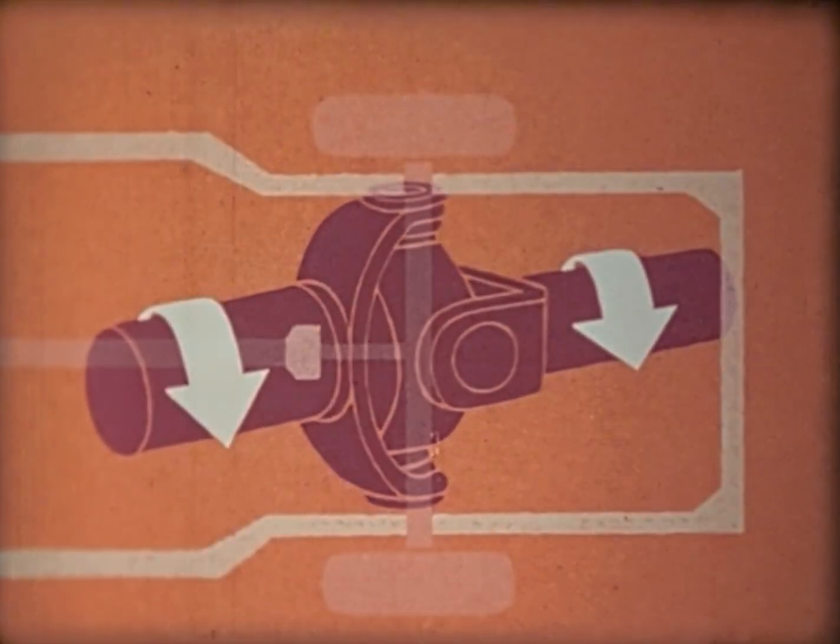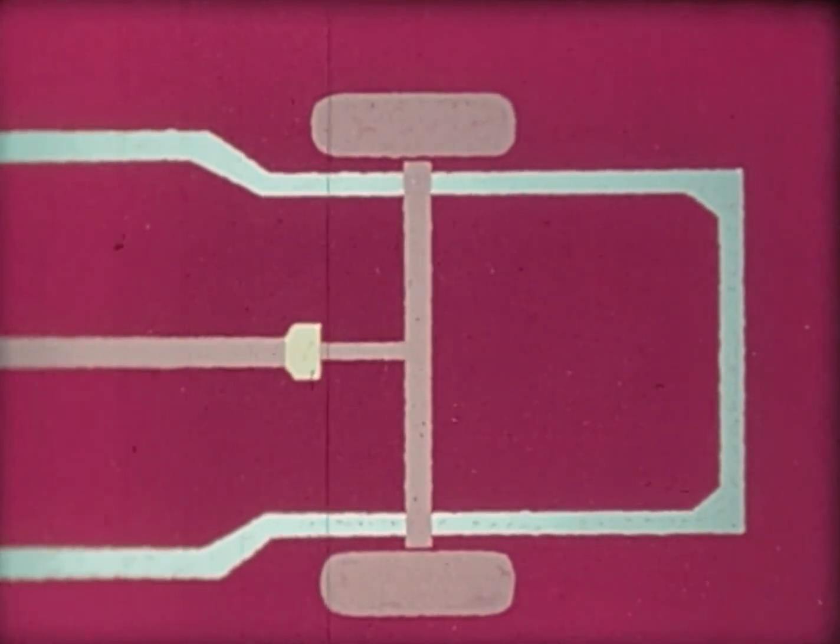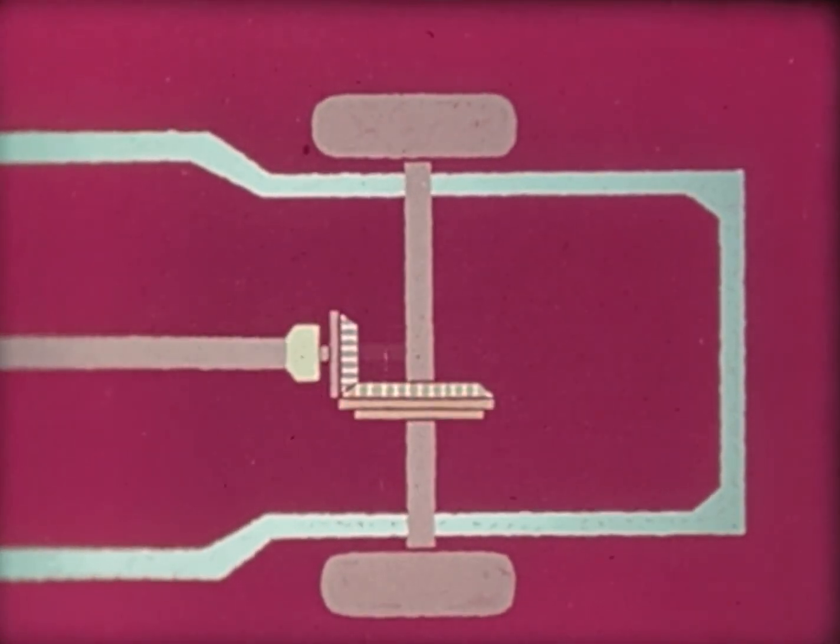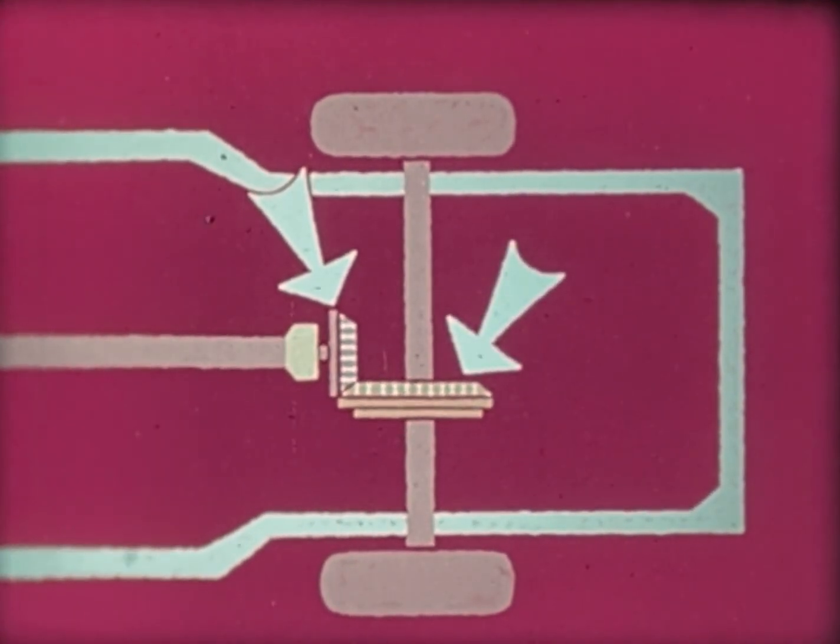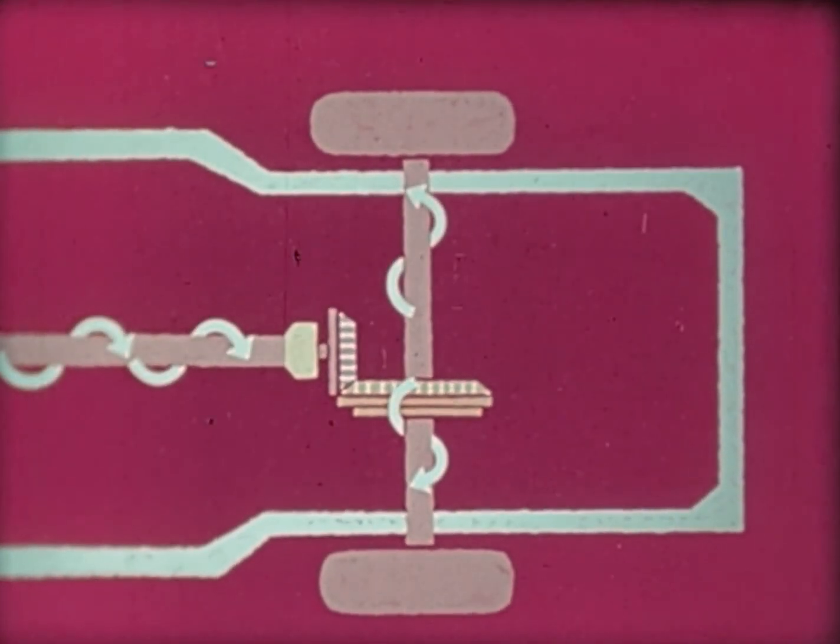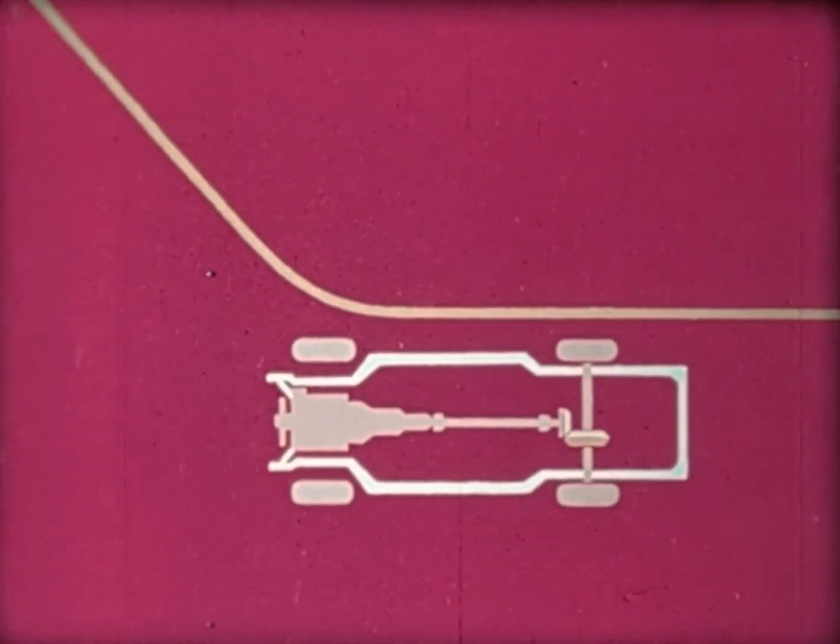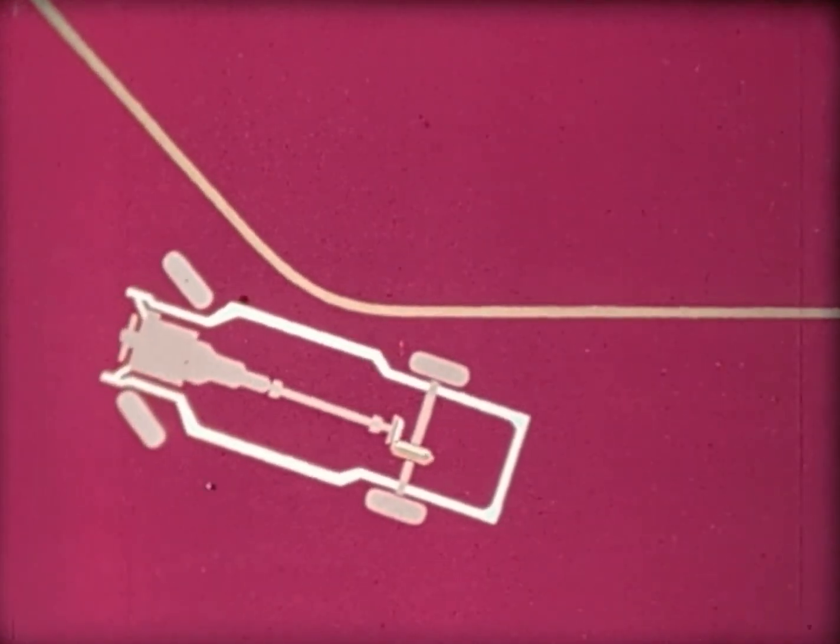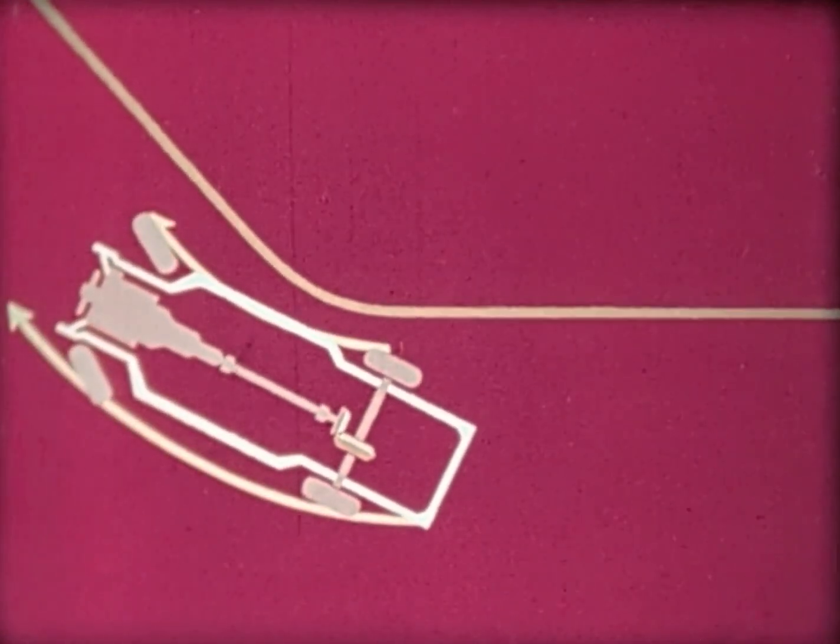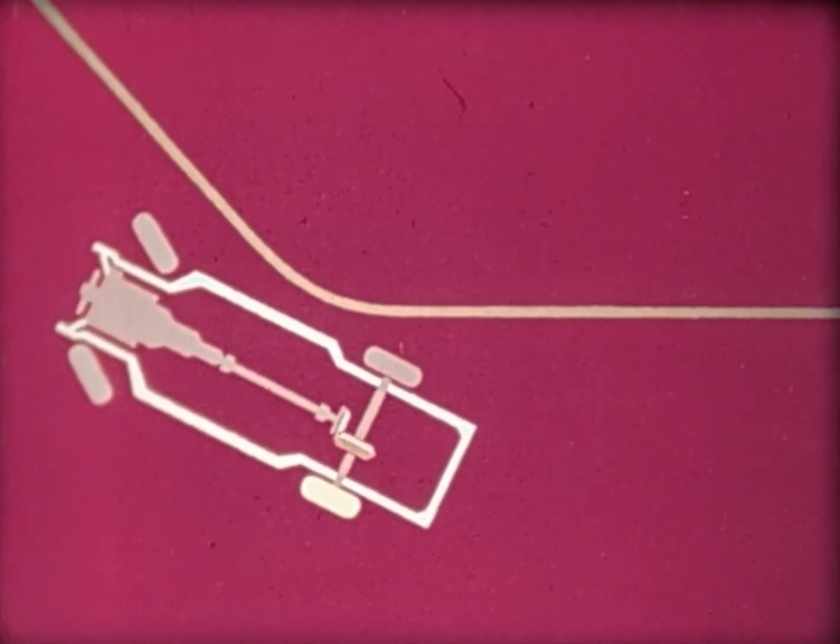But now we have another problem: that of transferring the shaft torque to the rear axle. We could use a small pinion gear on the shaft and a ring gear on the rear axle. But when the car makes a turn, the outside wheel travels farther than the inside one in the same amount of time, so one of the wheels would have to skid around the turn.